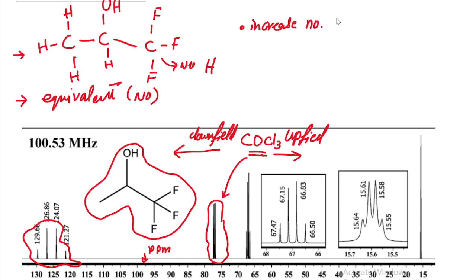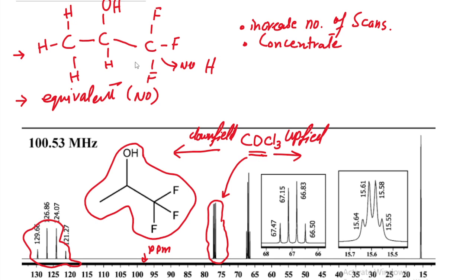We can solve the weak signal problem by increasing the number of scans. When we increase the number of scans in the NMR instrument in the laboratory, it will decrease the signal-to-noise ratio — noise will be low and our signals will be stronger. We can also concentrate our sample. For example, the 1,1,1-trifluoro-2-propanol sample can be concentrated to solve this problem.